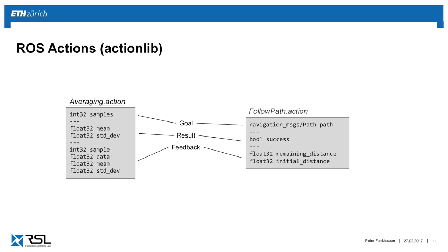Here are two examples of action definitions. On the left is a simple averaging mechanism — you send samples and get back the mean and standard deviation. The result would be two floats, and for feedback you'd get the current mean and standard deviation calculated so far. On the right, similar to 'go robot there', you'd have a follow-path action where the goal for the robot is the path, the result is whether it succeeded, and the feedback shows the remaining distance out of the total distance the robot has to go.